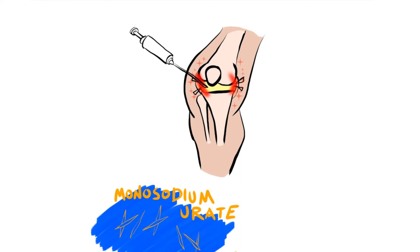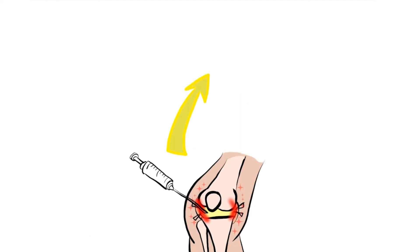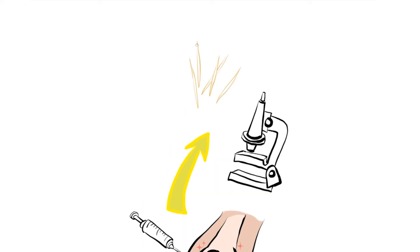Gout is diagnosed by obtaining joint fluid from the affected joint and examining it under a microscope using polarized light. It is not always possible to obtain joint fluid from the inflamed joint.